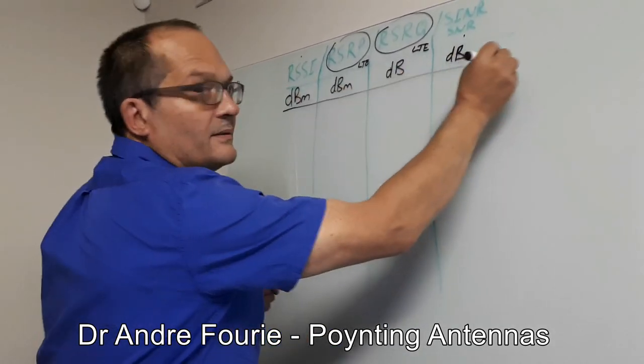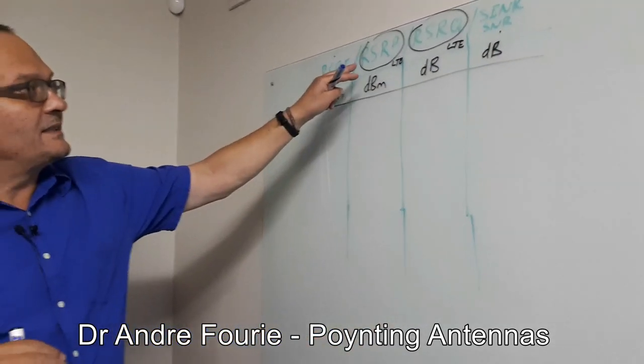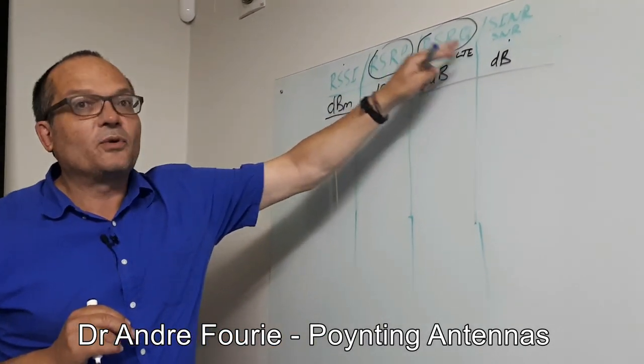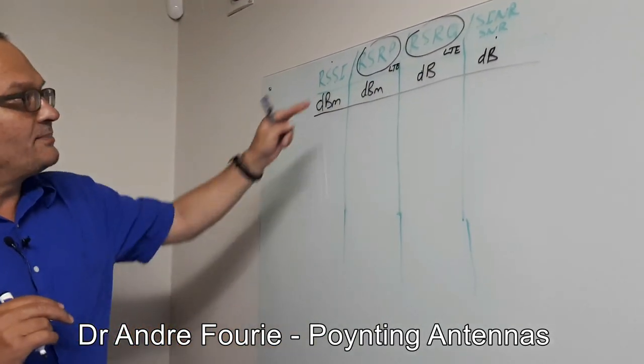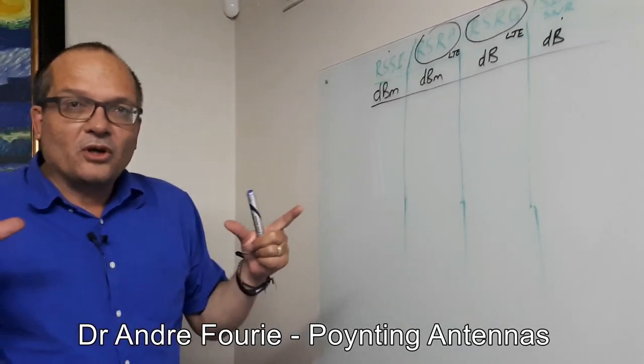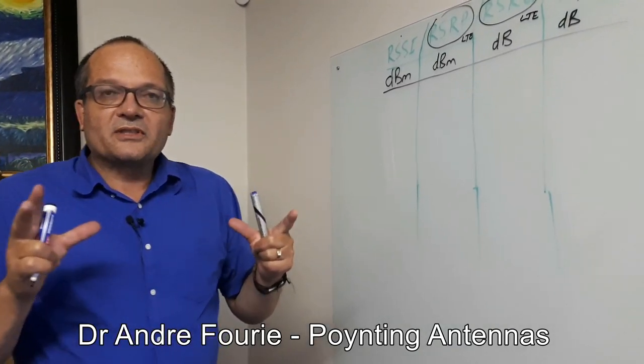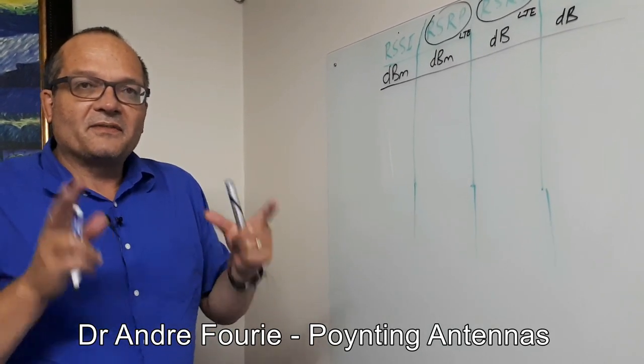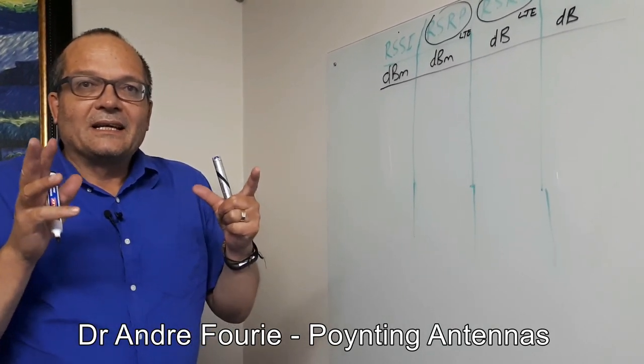Why are they different? The fact is that this reference signal received power, reference signal received quality, is because a LTE or OFDM block has got certain resource blocks, and you also sometimes have more than one antenna. So you need to measure specifically the power in the essentially the base station reference signals, which is always there.